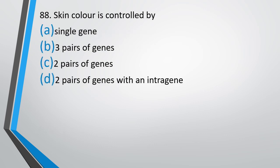Question number 88. Skin color is controlled by: single gene, 3 pairs of genes, 2 pairs of genes, 2 pairs of genes with an intragene. Skin color is controlled by - correct answer is option B, it is controlled by 3 pairs of genes.